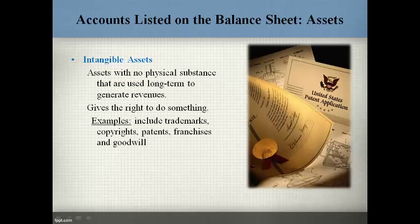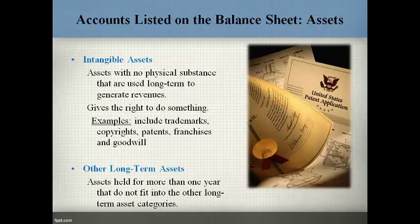Intangible assets have no physical substance and are an exclusive right to do something that generates revenues for more than one year. Examples are trademarks, copyrights, patents, franchises, and goodwill. Other long-term assets are other items that bring future benefit that do not fit into any of the other categories of assets.